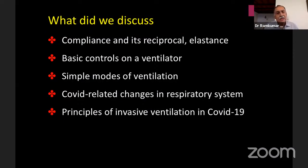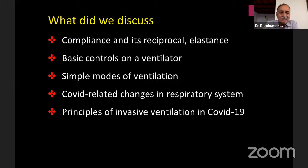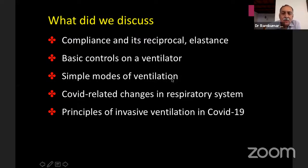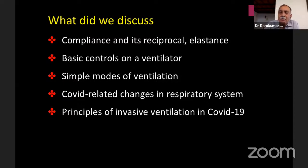In summary, we covered five points: compliance as a measure of degree of distensibility of the lung and elastance as its reciprocal; basic ventilator controls — FiO2, rate, CPAP/PEEP, and tidal volume settings; basic modes of ventilation — CMV, SIMV, CPAP or PEEP, and pressure support ventilation; difference between volume control and pressure control ventilation; and two types of COVID lung involvement — Type L and Type H — and the principles of invasive ventilation for each.